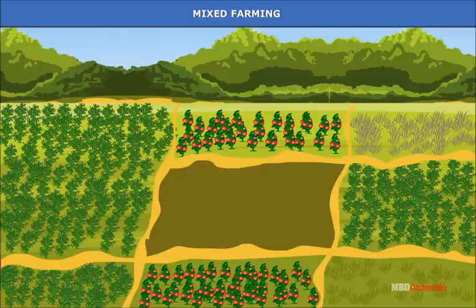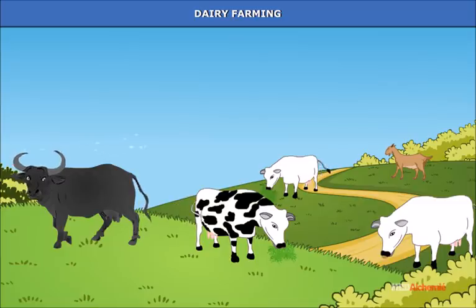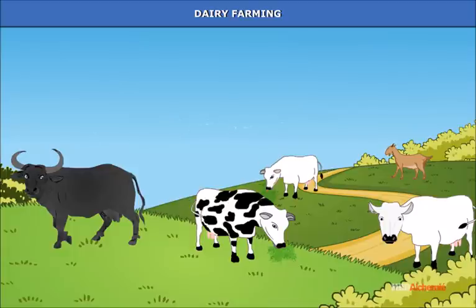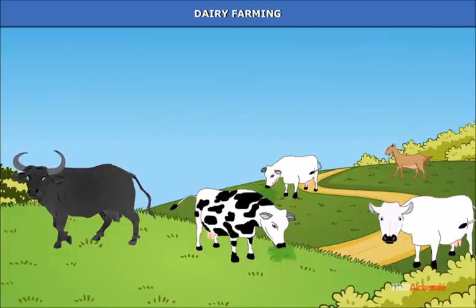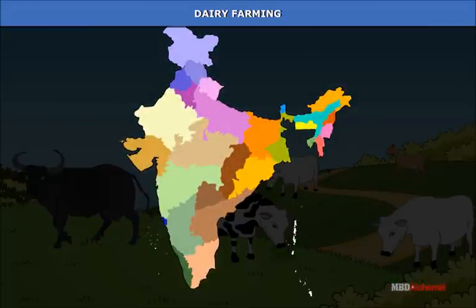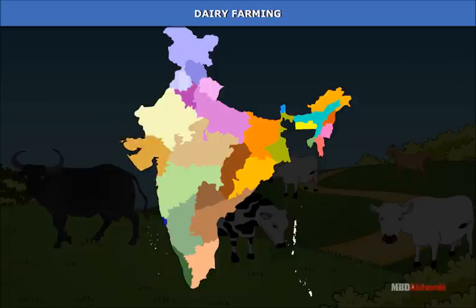Mixed farming: In mixed farming, emphasis is on both crop production and raising of livestock. Mixed crop cultivation is also carried out in India. Dairy farming: Dairy farming involves cattle rearing, especially milk cows, for milk and milk products. India has achieved some significant breakthrough in cooperative dairy farming with Gujarat taking the lead, followed by Punjab and Madhya Pradesh.